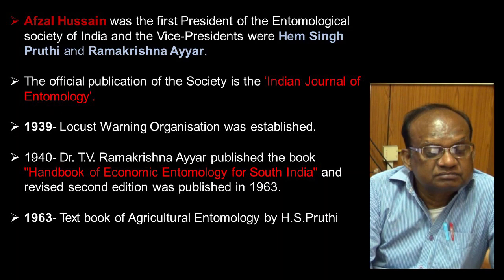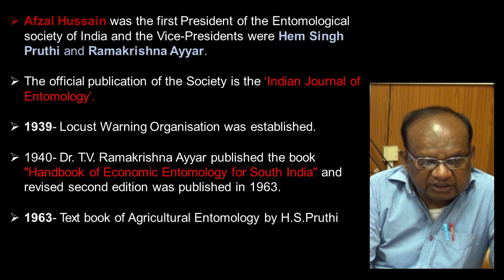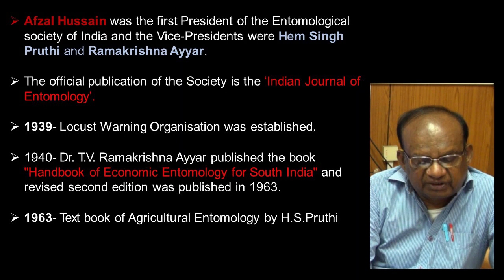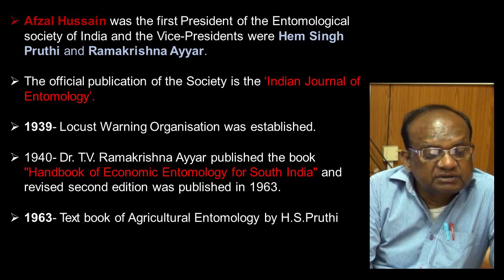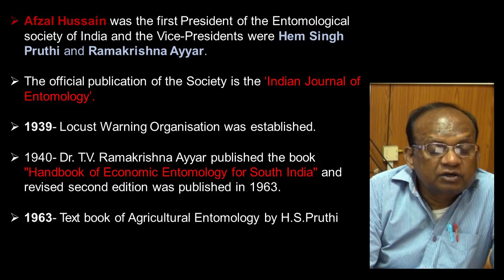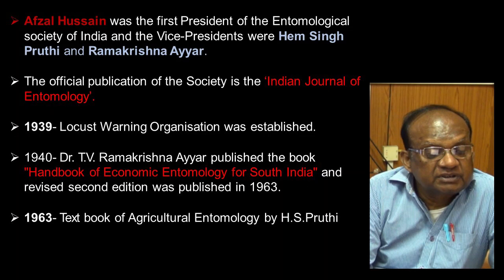In 1939, the Locust Warning Organization was established, because locusts are a very destructive pest having sudden outbreaks as a swarm. Even in recent years, locusts continue to cause severe damage to agriculture and crop production, with certain states still facing the locust problem.